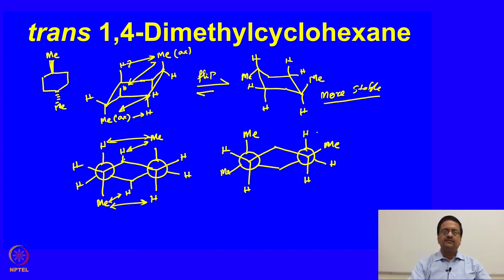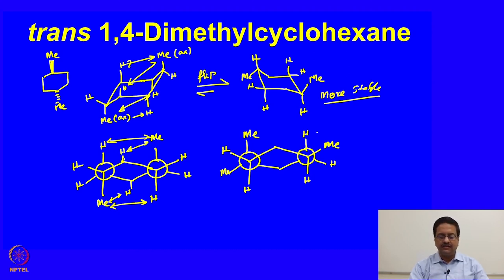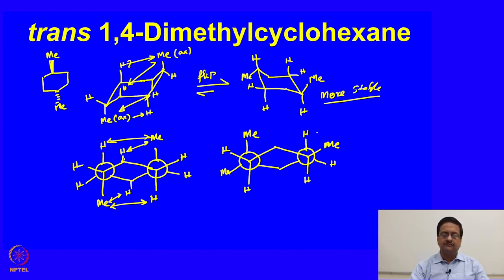In this lecture we have understood the conformations of disubstituted cyclohexane derivatives and how to draw those in the chair form, convert those chair form conformations to the Newman projection, and calculate the interaction energies based on whatever interactions are present. I would like you to go through the textbook, get the energy values for 1,3-diaxial interactions and the n-butane gauche interactions, and calculate yourself to find out the energy values associated with these conformational differences. With this we conclude this lecture and will continue from here. Thank you.